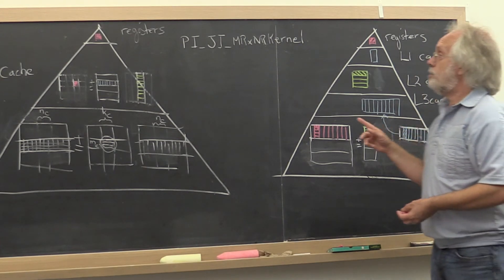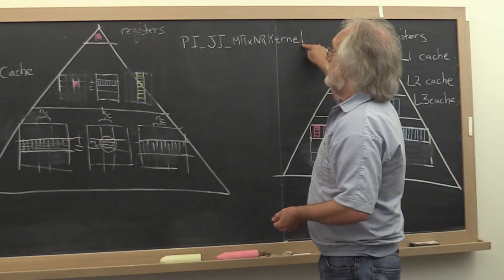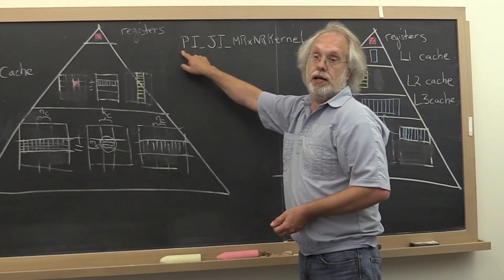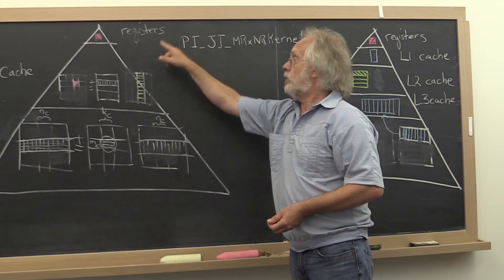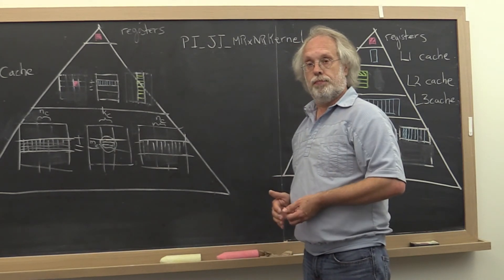How many loops do we end up with then? Well, around the microkernel we already had four loops, and we're now saying we need one more loop. Five loops around the microkernel.